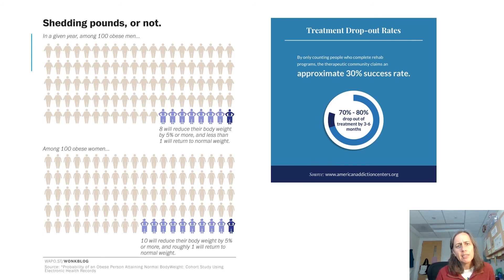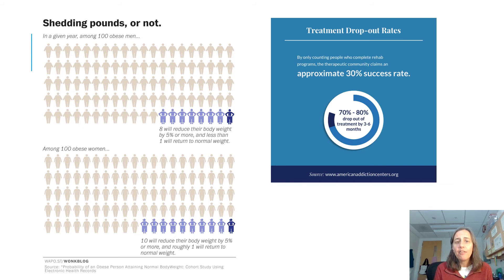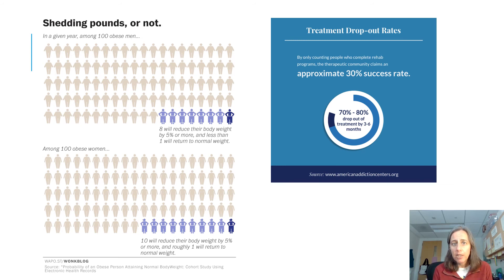Addiction treatment is also really difficult. A lot of people in the therapeutic community say 30% of people can kick their addiction and recover — which already sounds pretty low. But when you look more closely, that 30% success rate is based on people who complete the treatment program, and normally only 20–30% of people who enter a treatment program actually complete it. So at best, about 10% of people with addiction are truly successful at recovering and staying clean. This stuff is super, super hard.